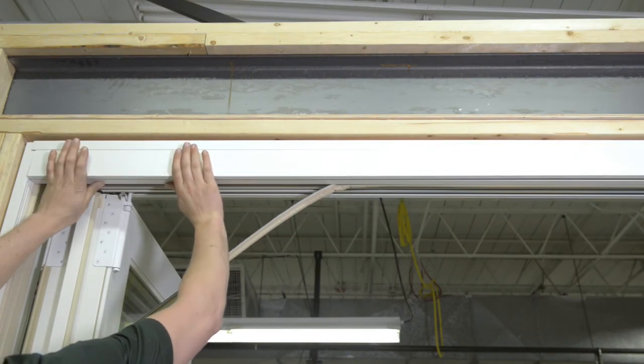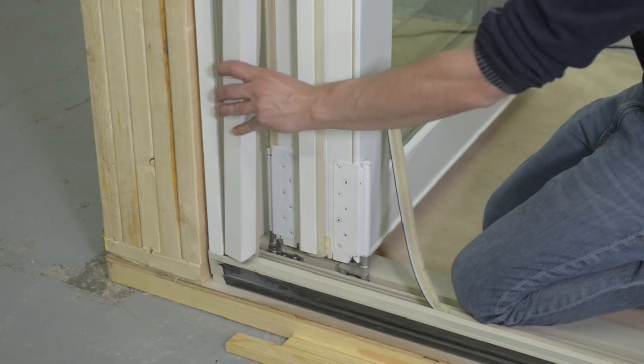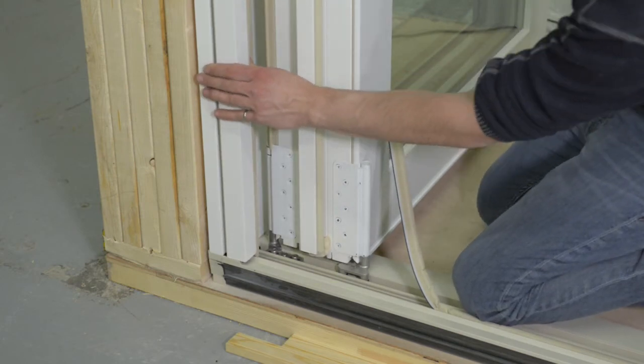Install head jamb part stop. Install wood part stops ensuring longer side of weather strip is towards the sill.